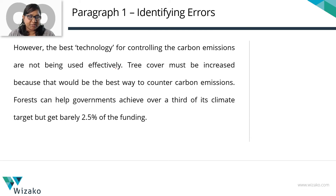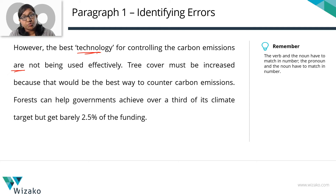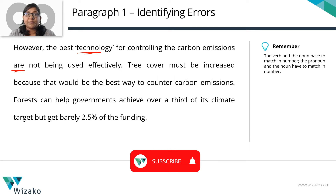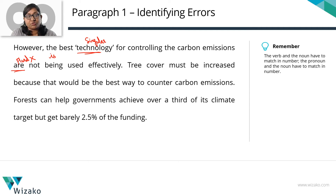Here's the next sentence: 'However, the best technology for controlling the carbon emissions are not being used effectively.' What's not being used effectively? The technology for controlling carbon emissions. As we discussed, if your noun is singular you need a singular verb, and if plural you need a plural verb. 'Technology' is singular, but 'are' is plural — you cannot use a plural verb here. You should say 'is not being used effectively.' That is the correct usage.